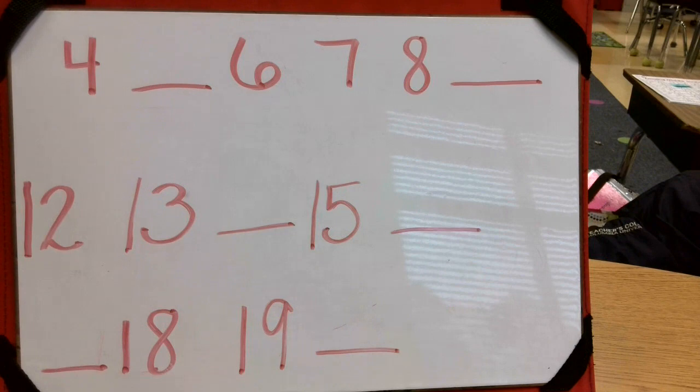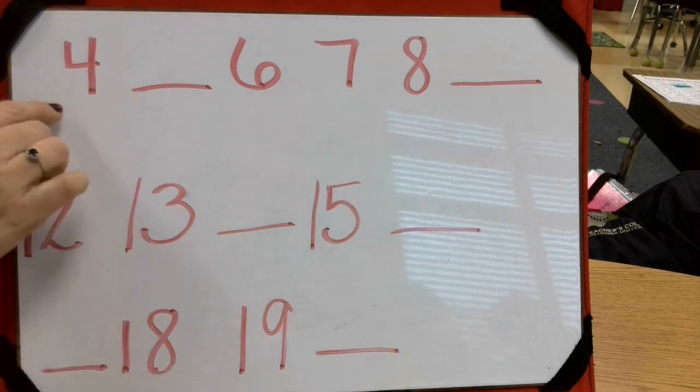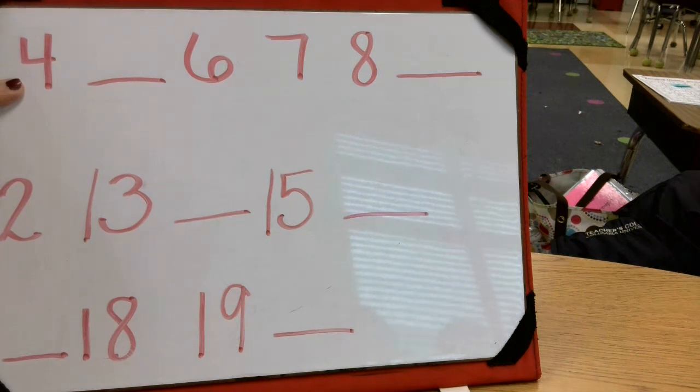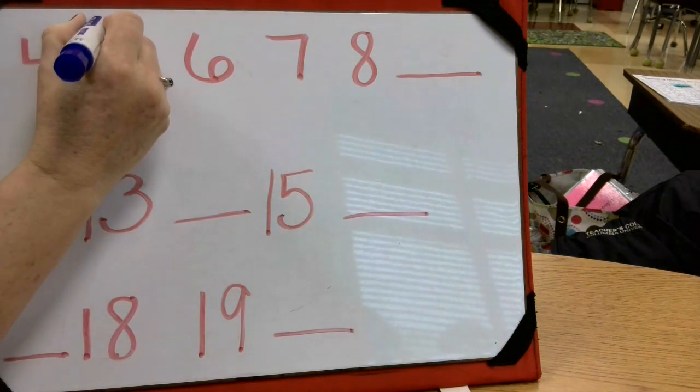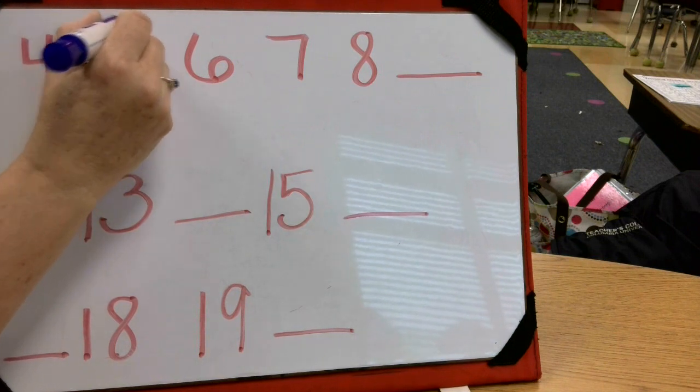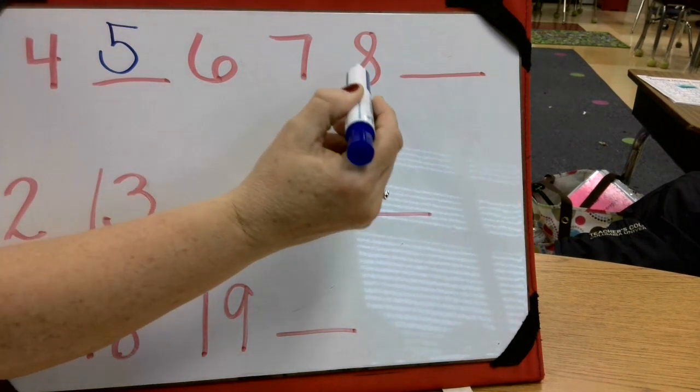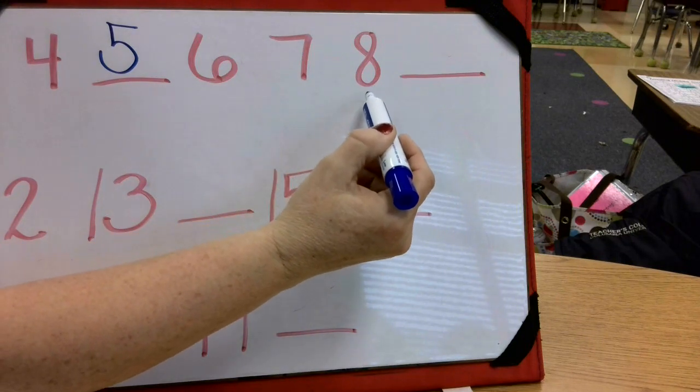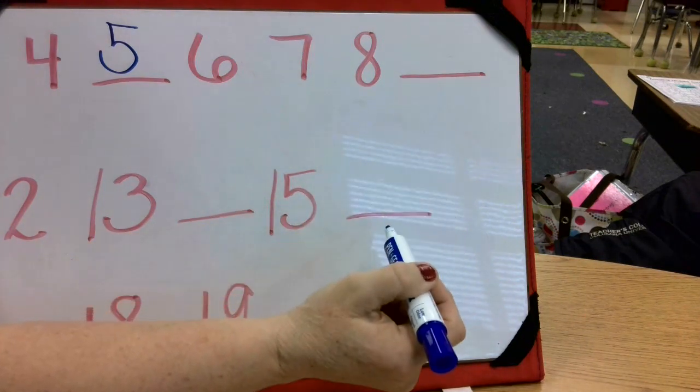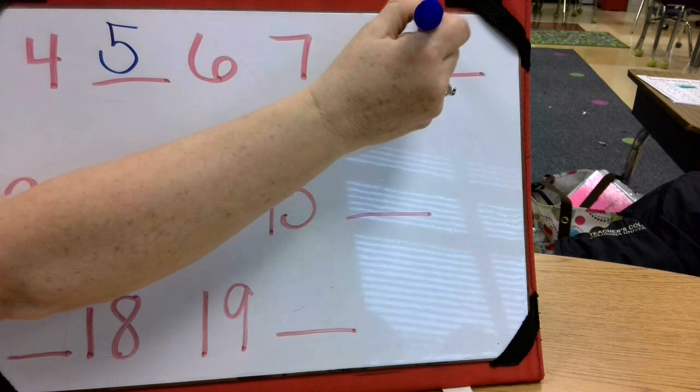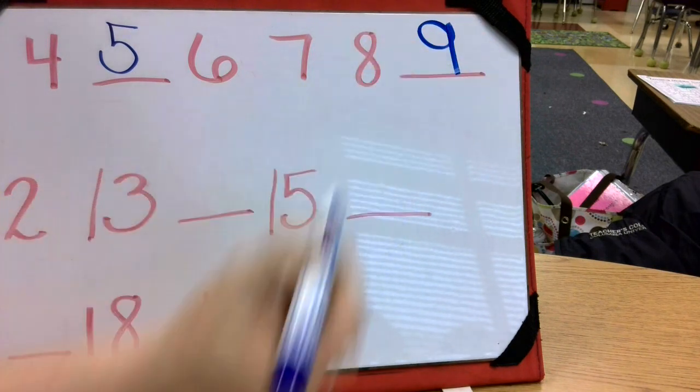Today's number writing lesson will consist of filling in the missing numbers. We might have to go backwards and we may have to go forwards when we're trying to figure out our number. So when we start here, what number comes after four? Can you write a five? Let's count: four, five, six, seven, eight. What number comes after eight? Yes, good job, the number nine.